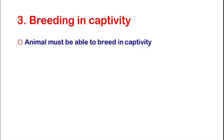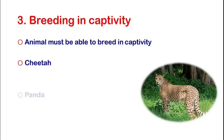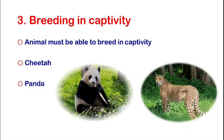Breeding in Captivity. An animal must be able to breed in captivity. Those animals which require a lot of area to breed, like cheetahs and pandas, are difficult to domesticate.